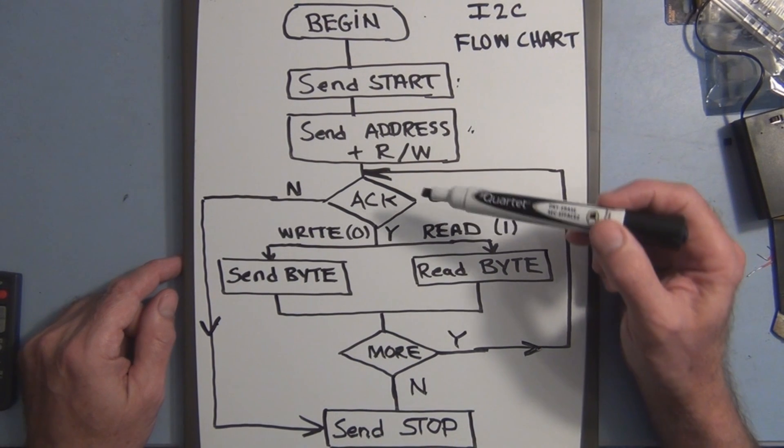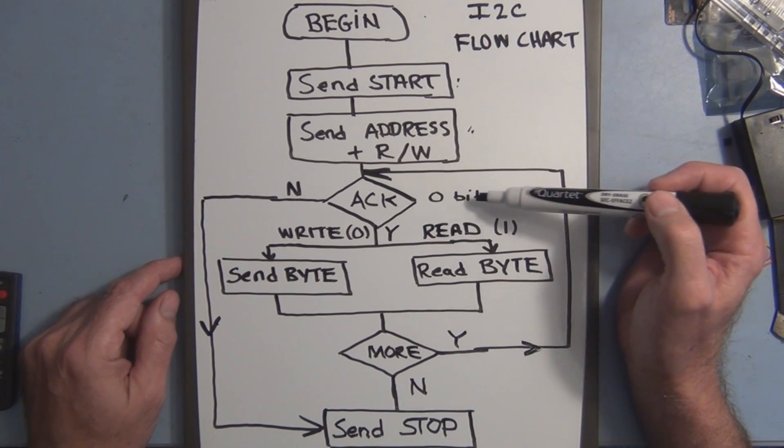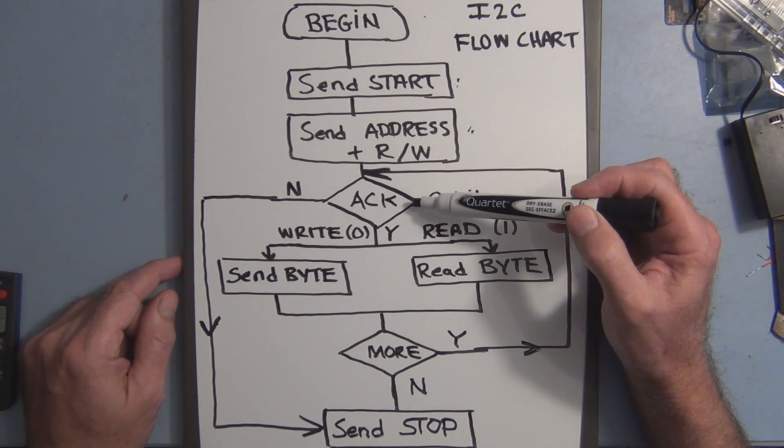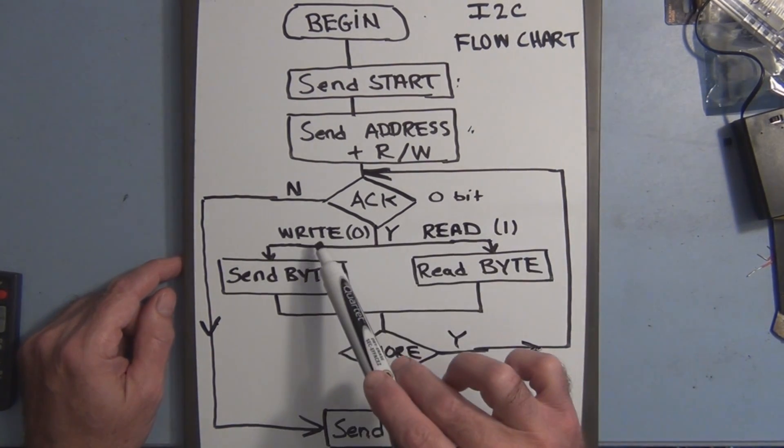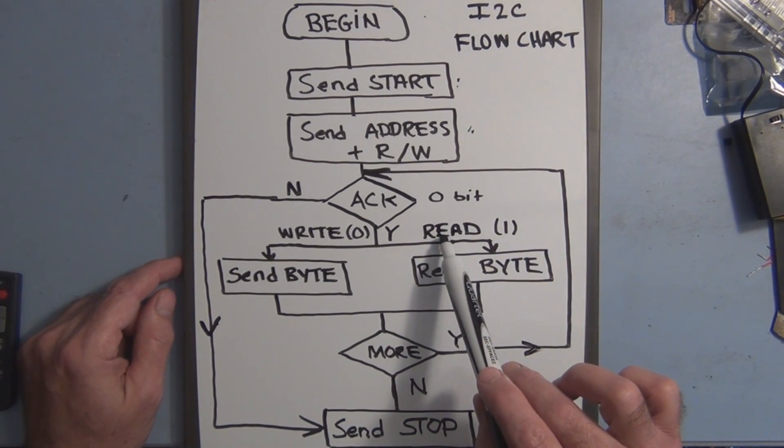The slave device then sends you a bit, a zero bit, and acknowledges the communication. It says, okay, I'm ready. And if it's acknowledged, you can either write or you can read from that device.